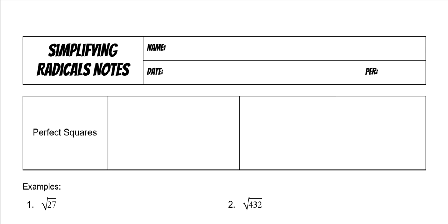Today we're going to go over simplifying radicals. We've done this a little bit in other notes, but we've never just focused completely on it. After we have done these notes today, every test that you take, you will be expected to simplify the radicals because we're going to spend an entire day on it. So first of all, perfect squares — it's a number where the square root gives you a whole number answer.